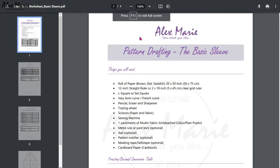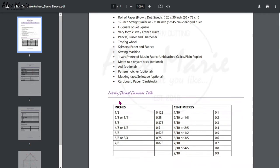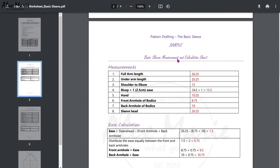We are starting with the basic sleeve today. You need to get this worksheet; the link is below. It's just about four pages, a PDF. It has a list of things you may need: pencils, rulers, paper, etc. It has your fractional decimal conversion table. You can do this exercise in inches or centimeters. Next you have your sample page here. I have filled in some measurements so you can see how the